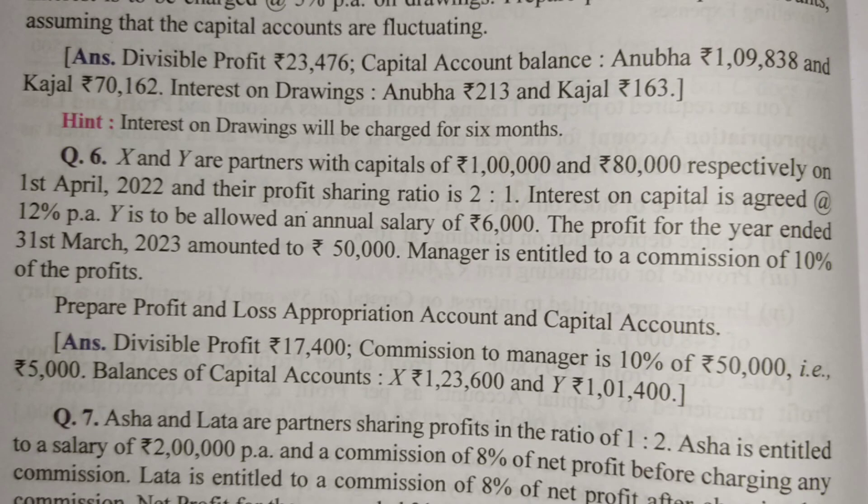The profit for the year ended 31st March 2023 amounted to 50,000. The manager is entitled to a commission of 10% of the profits — so the manager is paid 10% commission on profit.